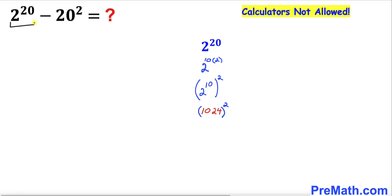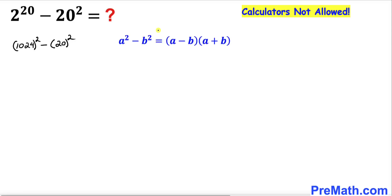Now, 2 power 10 equals 1024. So therefore we are going to replace this part with simply 1024 whole square, minus — we're going to leave this one as it is — 20 power 2.